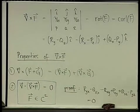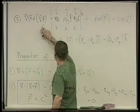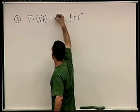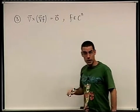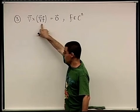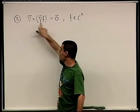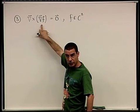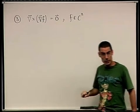A quick correction: when we write curl of grad(f) = 0, this is the zero vector, not the scalar zero. The gradient of a scalar function is a vector, and the rotor of a vector field is again a vector, so the result is the zero vector.